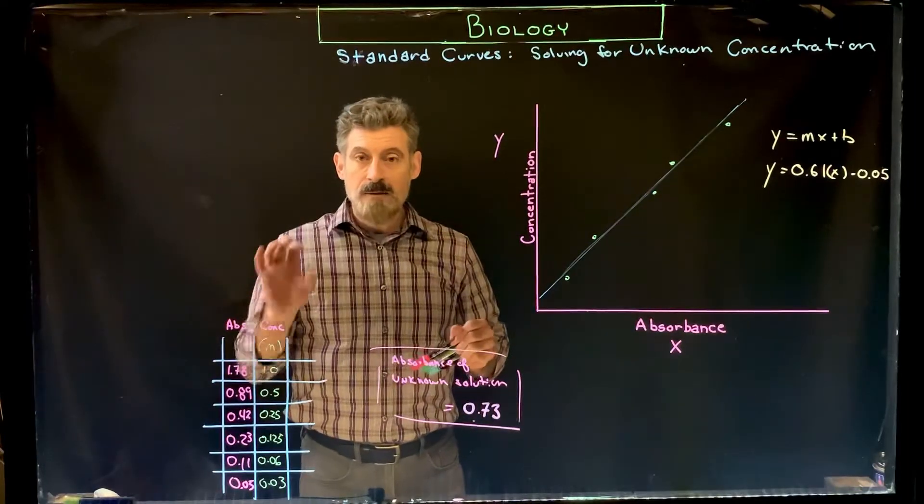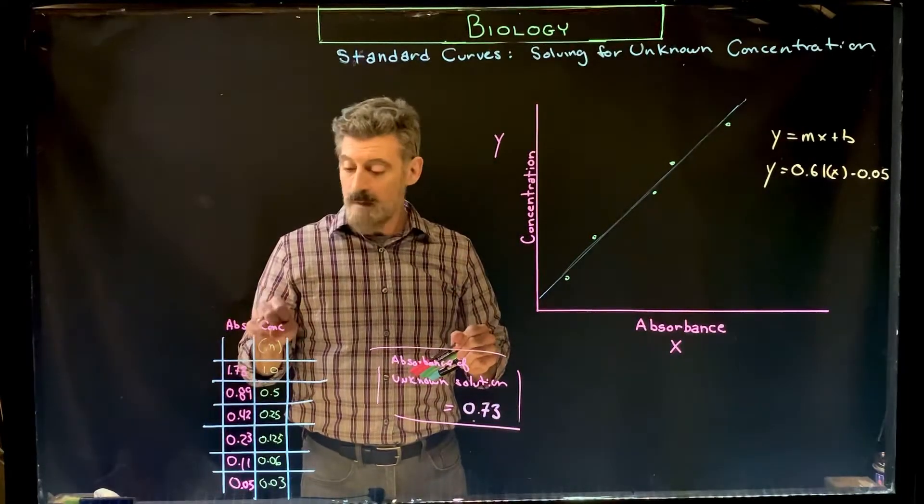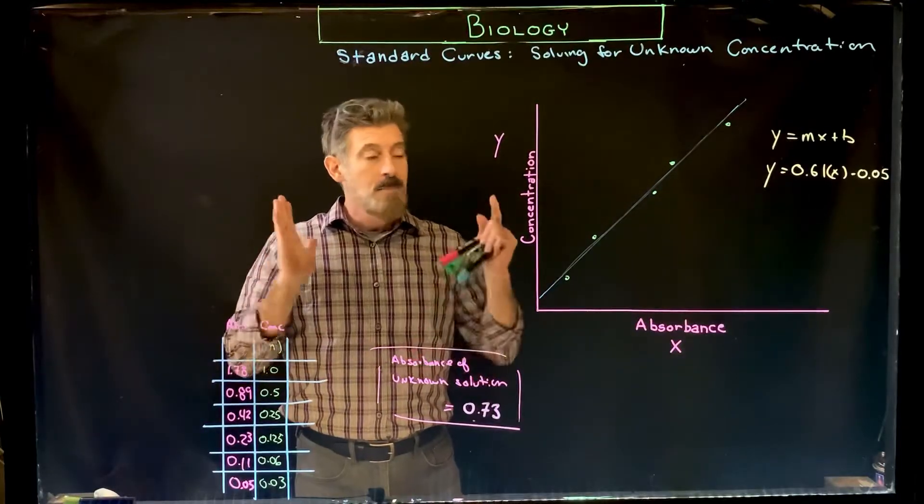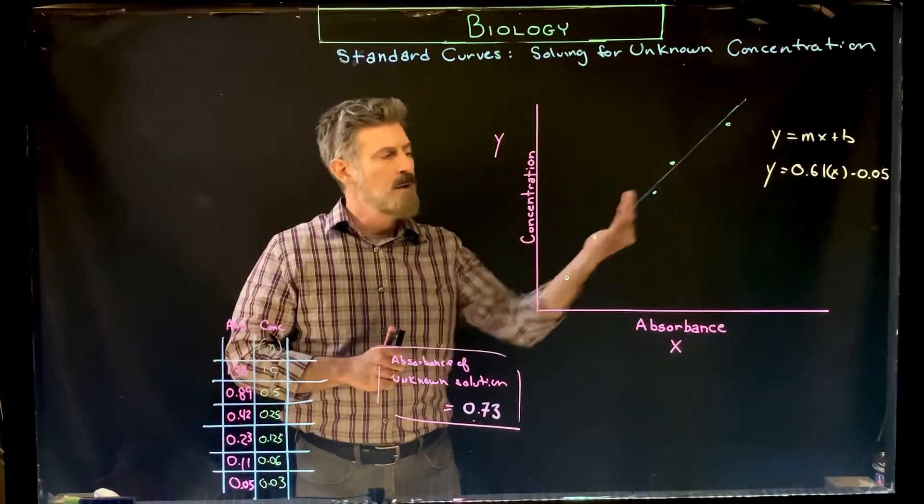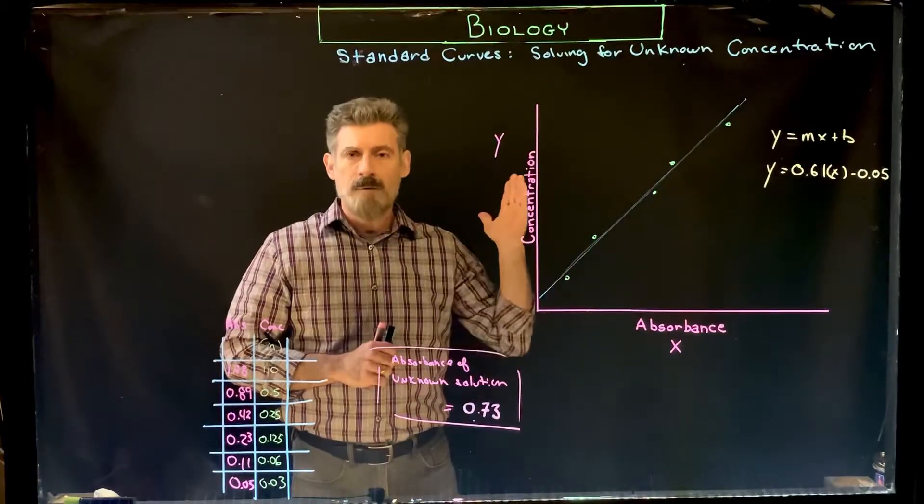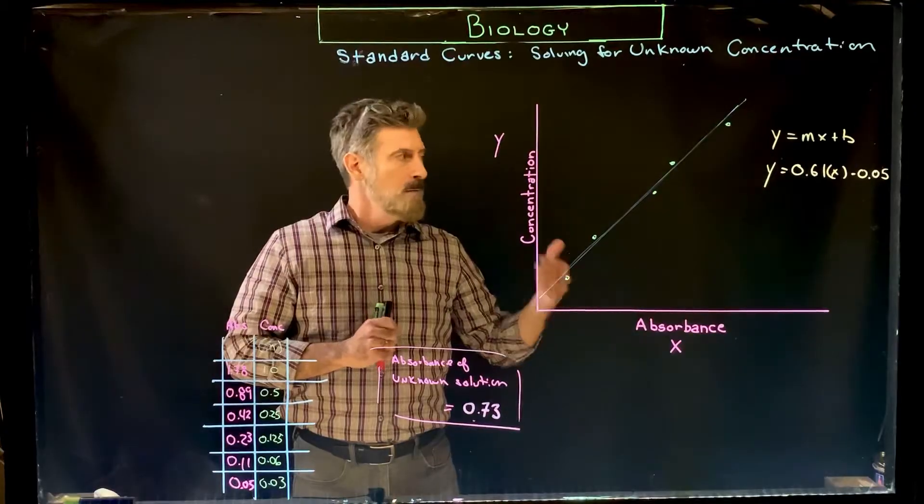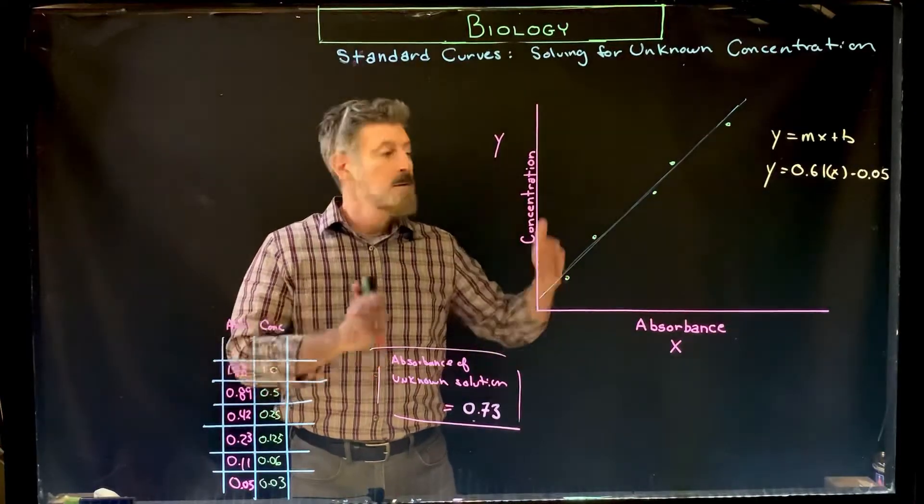You're going to either have your own data set or data sets that I provide for you on the website for class, and you're going to use those to first make your standard curve. You should have already done that, just made a standard curve and got the equation for the line from our standard lab on crystal violet, just dilution serial dilutions.